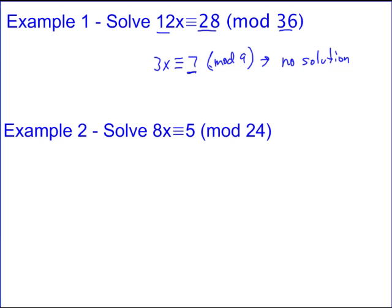Example 2, solve 8x equivalent to 5 mod 24. Nothing goes into all these. Again, 8 and 24 have 8 as a common factor. 8 does not divide 5, so this is also a no solution. So both of those, you know, it took us a while to get there on the first one, but both of those are just no solutions because of that last theorem that I told you about.